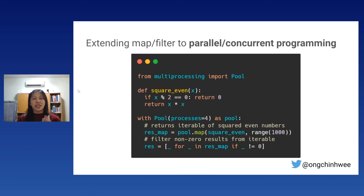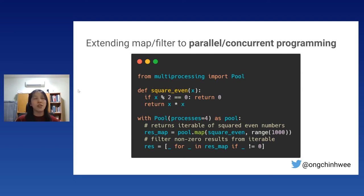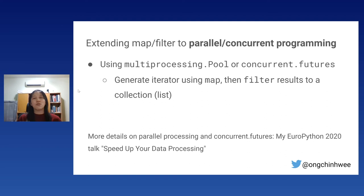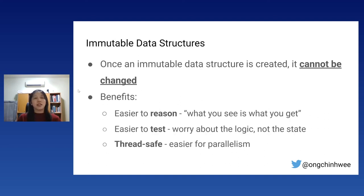We can extend map and filter to parallel and concurrent programming using multiprocessing or concurrent futures. For example, using multiprocessing.Pool to generate an iterator via map and then filtering the results. For more on using concurrent futures for parallel programming, check out my EuroPython talk on 'Speed Up Your Data Processing'.